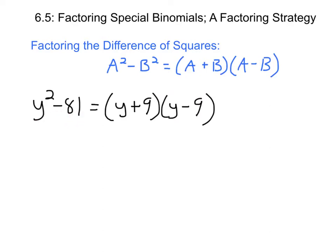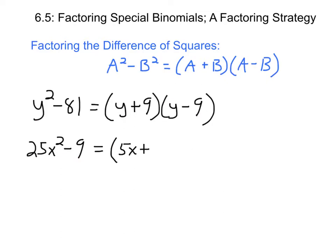Here's another example: 25x squared minus 9. This is a difference of squares because 25x squared equals (5x)², and 9 is 3 squared, and they're subtracted. So that factors into (5x + 3)(5x - 3). Notice you always have a plus in one factor and a minus in the other.